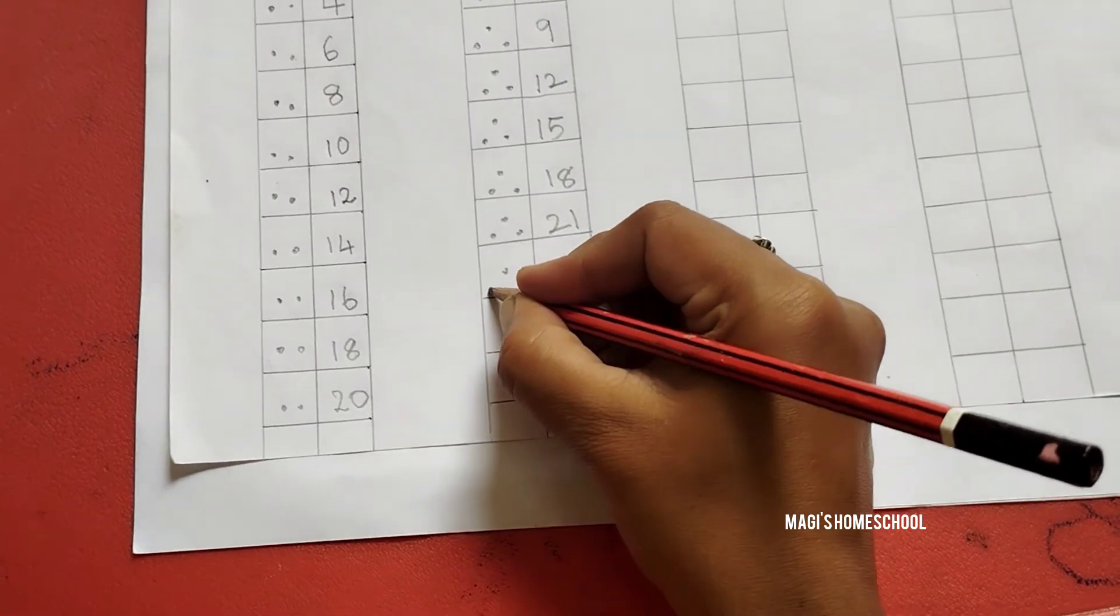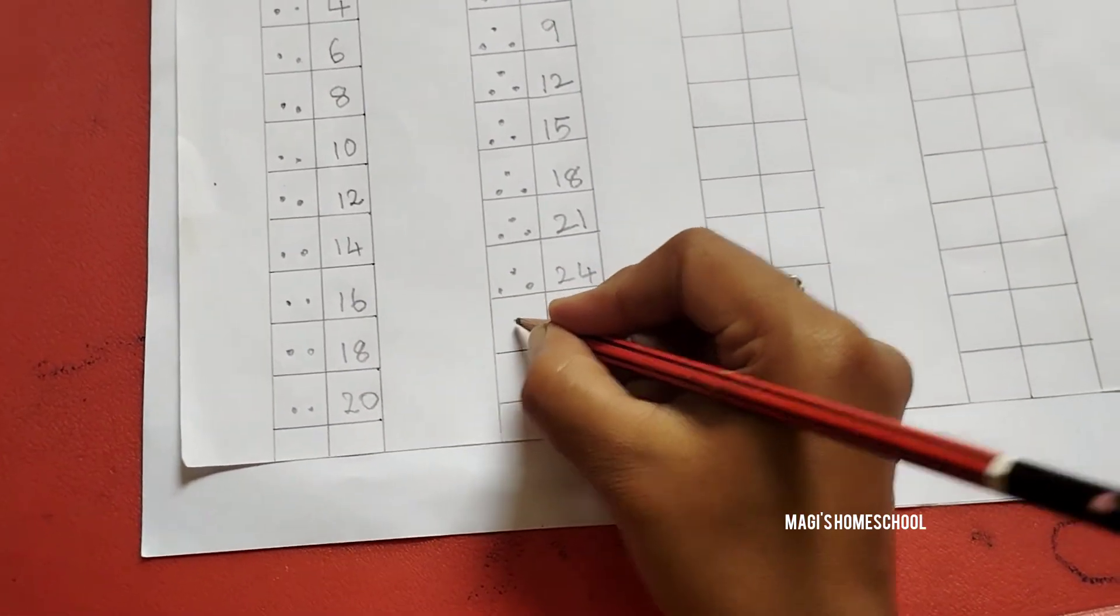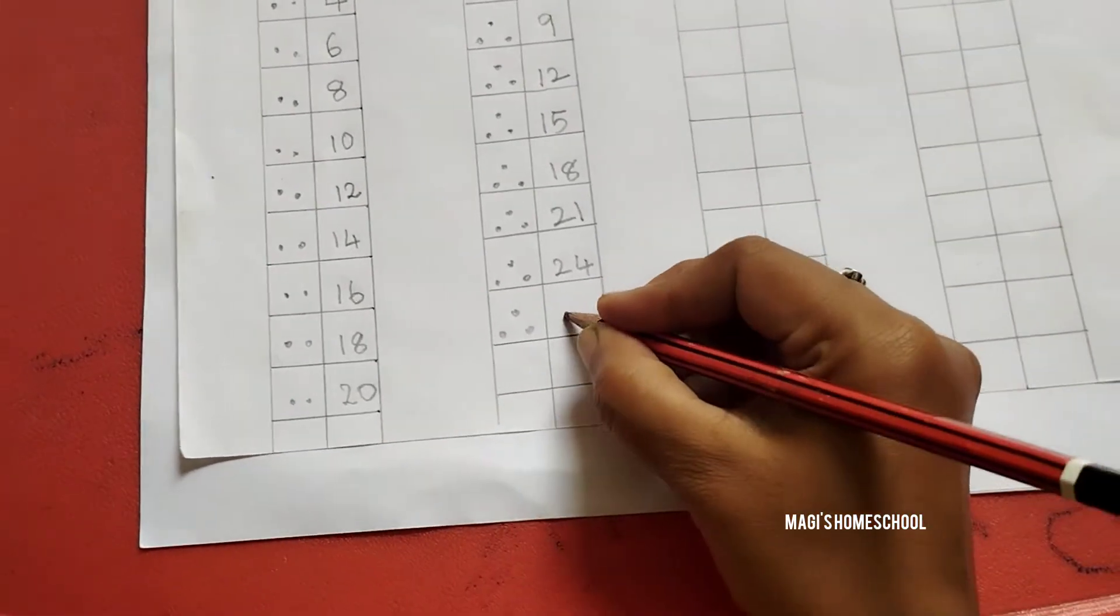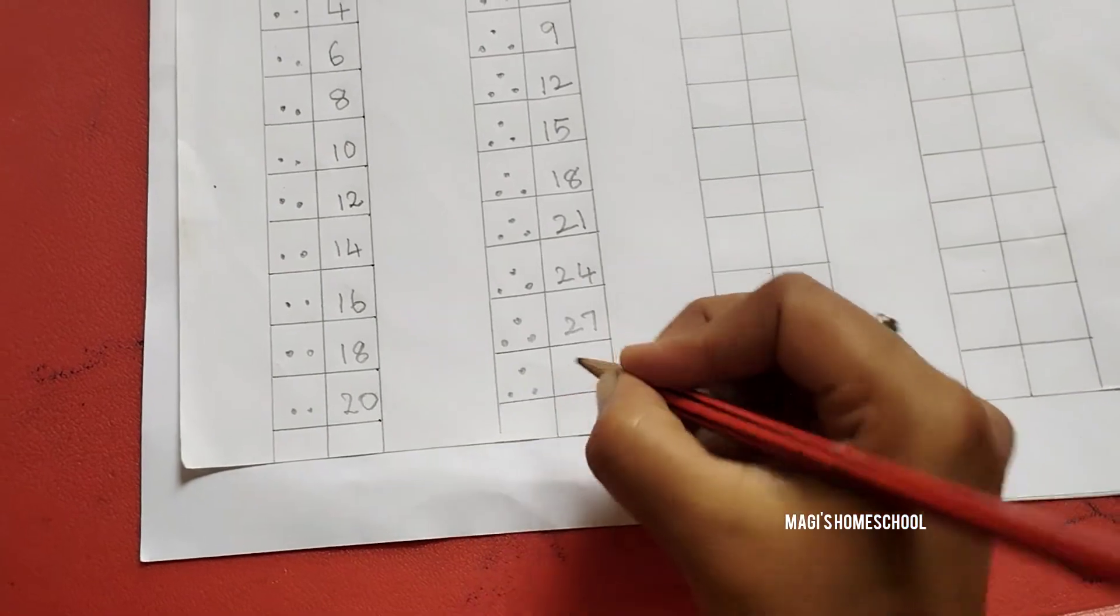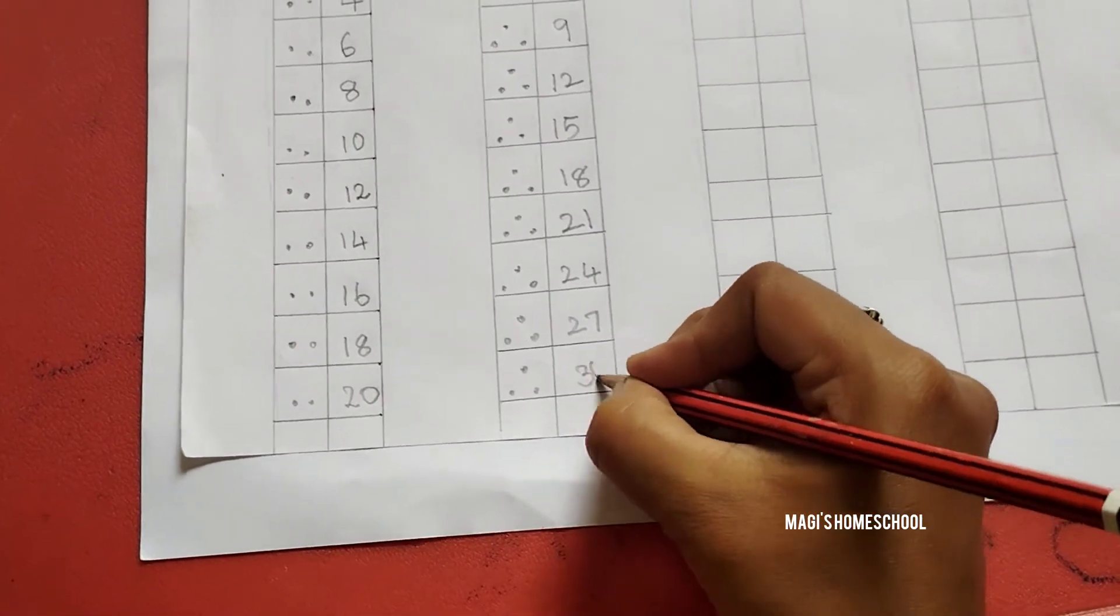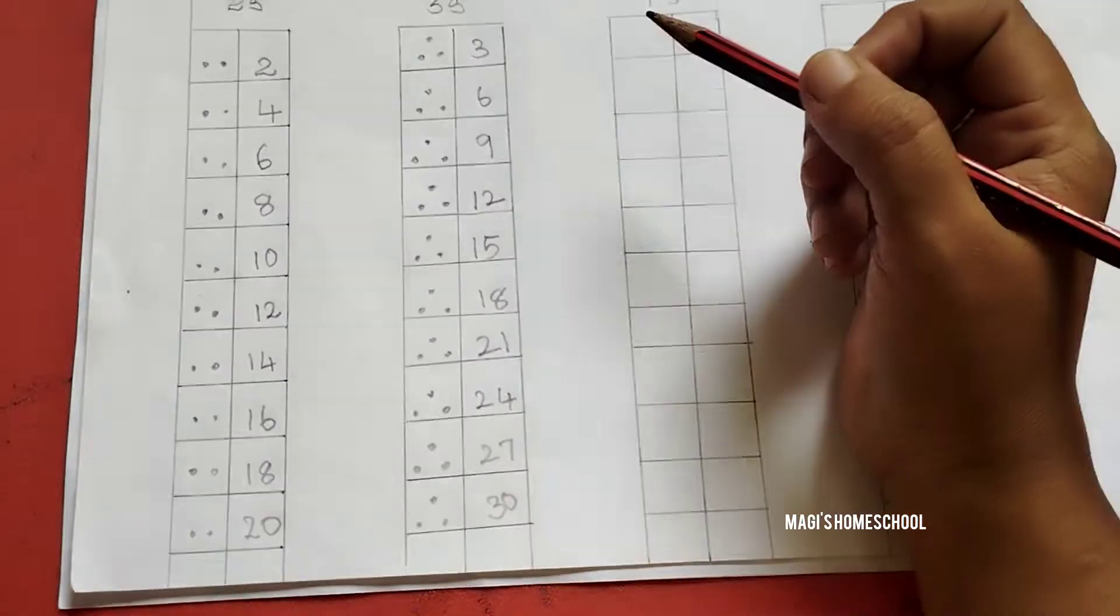After 21, 22, 23, 24. You have to write 24. After 24, 25, 26, 27. After 27, 28, 29, 30. Skip counting by 3 is over. Now let's move on to skip counting by 4.